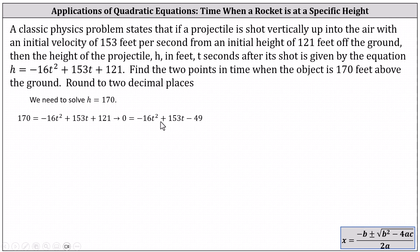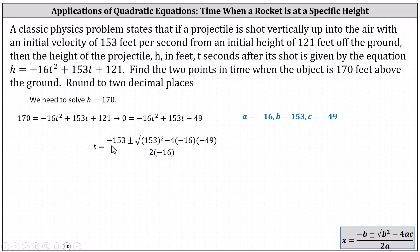This equation is not factorable, so we'll use the quadratic formula, where instead of x equals, in our case we'll have t equals. Looking at the equation, a is negative 16, b is 153, and c is negative 49. Performing substitution into the quadratic formula, we have t equals negative 153 plus or minus the square root of b squared — which is 153 squared — minus 4ac, which is minus 4 times negative 16 times negative 49, all over 2 times a, which is 2 times negative 16.